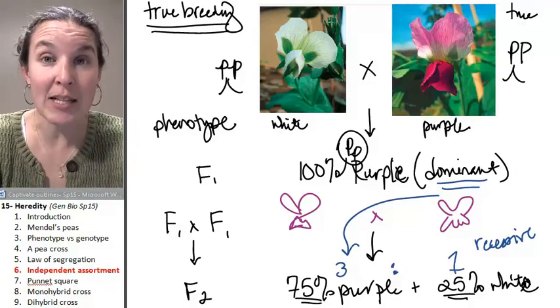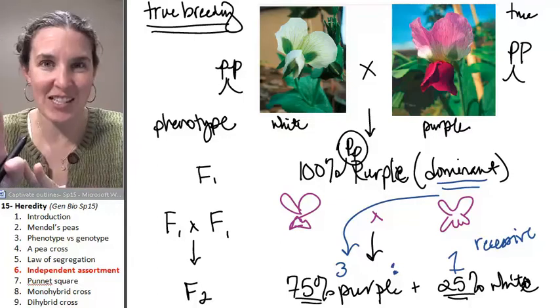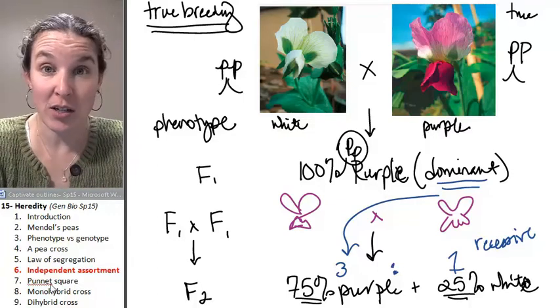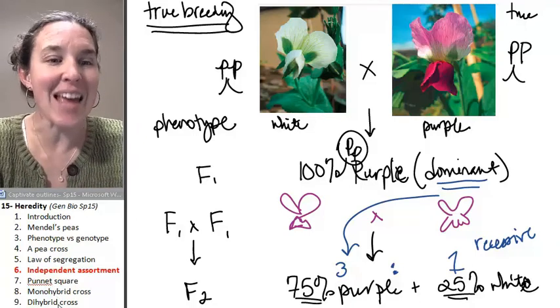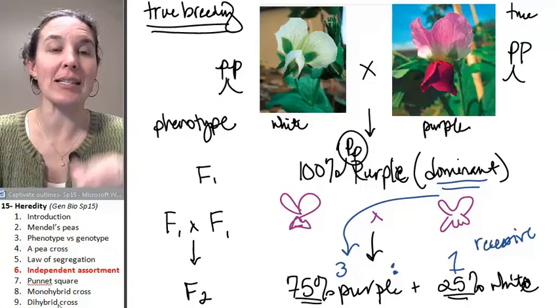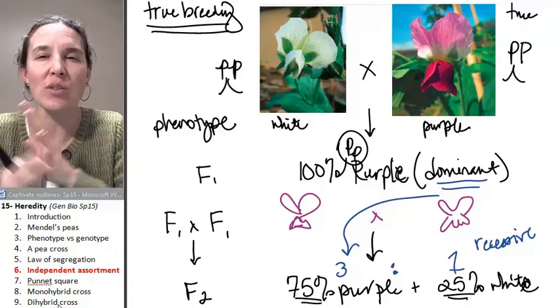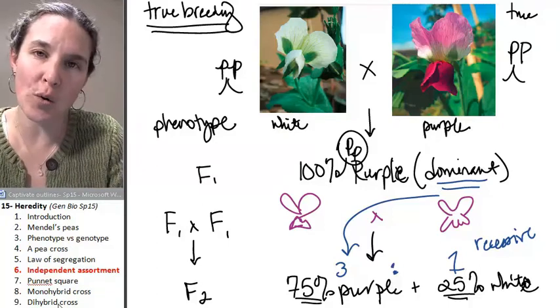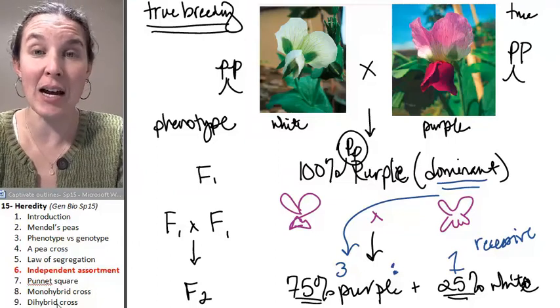Independent assortment is going to be visible when we do two different traits, and we're going to do that. We're going to do a Punnett square first, then we're going to do a simple monohybrid cross, and then we're going to do a dihybrid cross, and it's in dihybrid cross land that we can see the results of independent assortment, so I'm going to postpone our in-depth conversation about that until we get to dihybrid cross land.